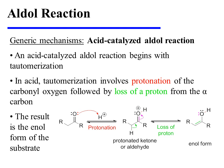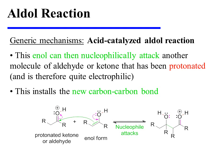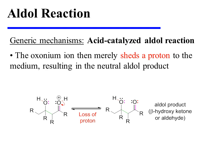An acid-catalyzed aldol reaction begins with tautomerization. In acid, tautomerization involves protonation of the carbonyl oxygen, followed by loss of a proton from the alpha-carbon. The result is the enol form of the original substrate. This enol is nucleophilic at the alpha-carbon and can therefore attack another molecule of aldehyde or ketone that has been protonated and is therefore quite electrophilic. This installs the new carbon-carbon bond. The oxonium ion then merely sheds a proton to the medium, resulting in the neutral aldol product.